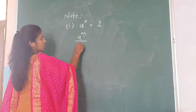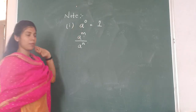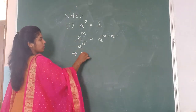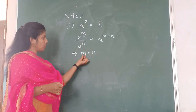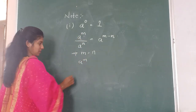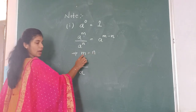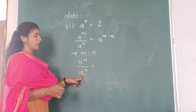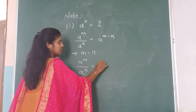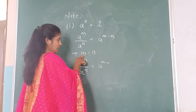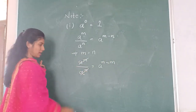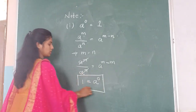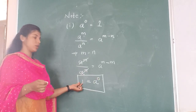Why is it always 1? I am going to use the third law: A to the power of M divided by A to the power of N equals A to the power of M minus N. Now I substitute M equal to N. So A to the power of M divided by A to the power of M — the terms cancel giving 1 — and the right side gives A to the power of M minus M, which is A to the power of 0. So this proves that anything to the power of 0 is always equal to 1.